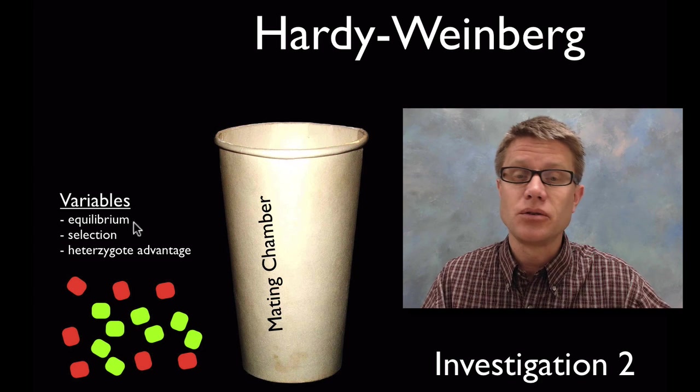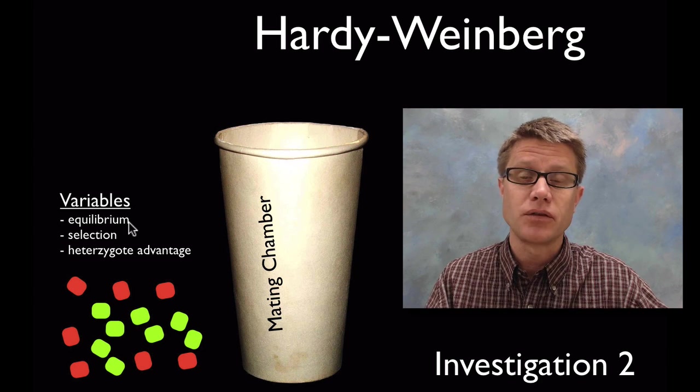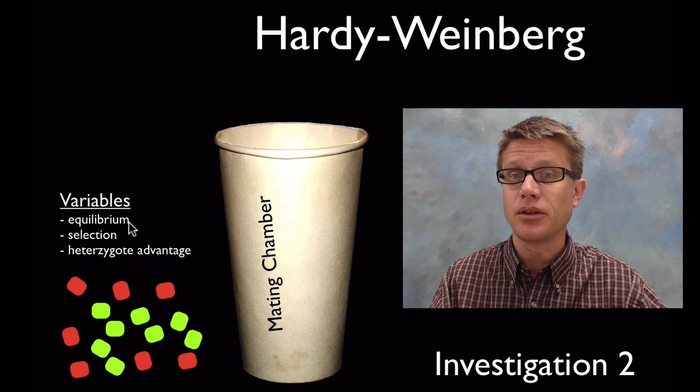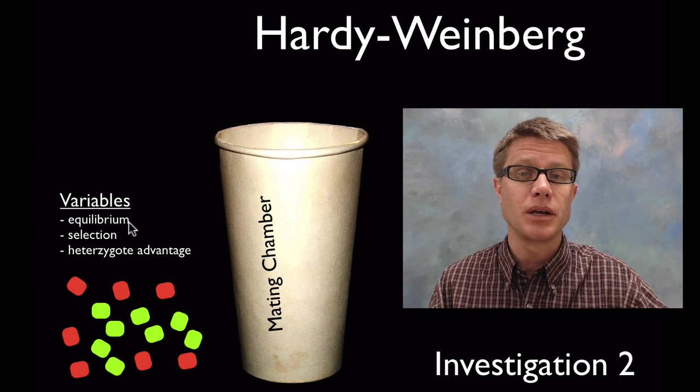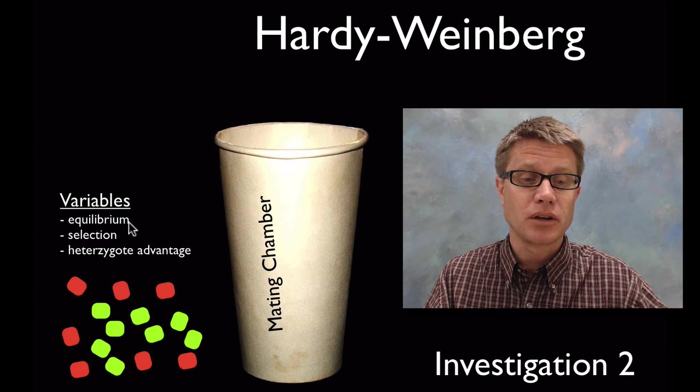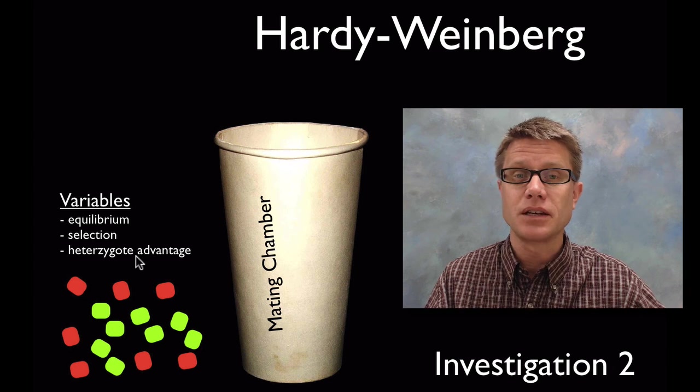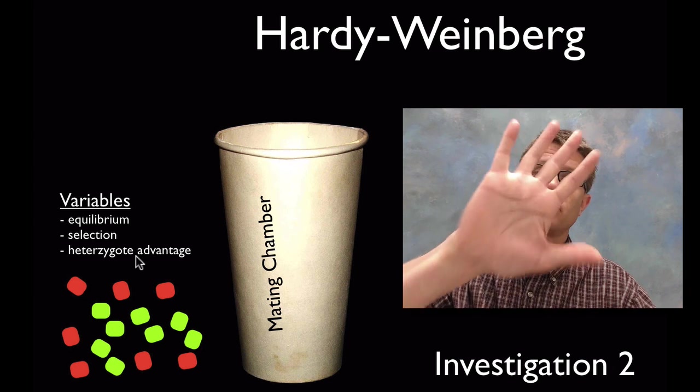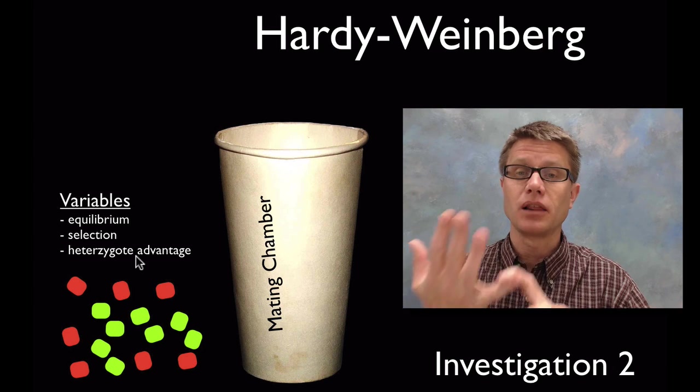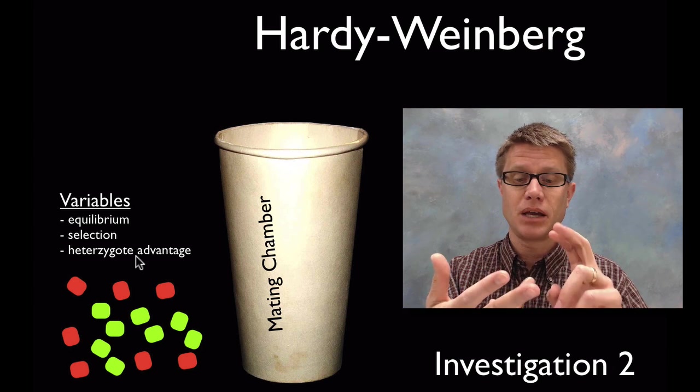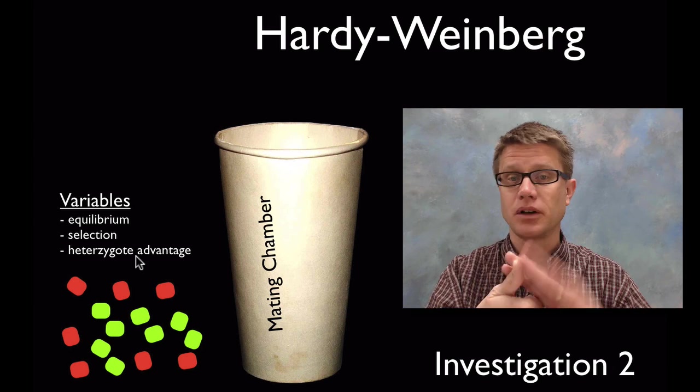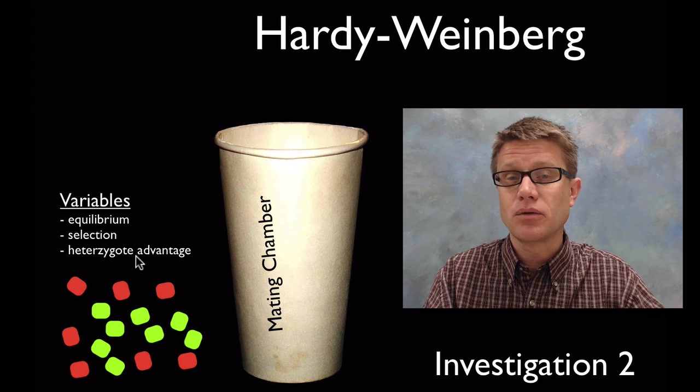Next thing you do is selection. If you pull out two of the homozygous recessives, then you can kill those and figure out the population based on the survivors. Another one you can look at is heterozygote advantage. You'll see a little bit of variance in the data. But as long as you're keeping those five constraints the same—large sample size, random mating, no mutations, no gene flow, and no natural selection—it should remain about the same.